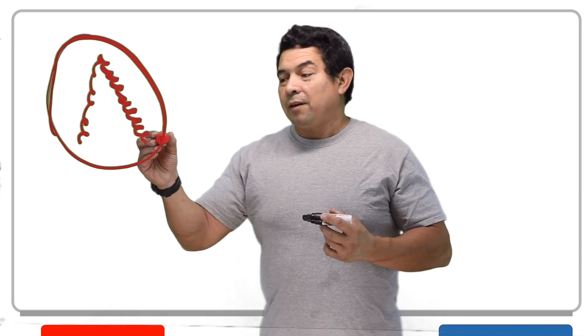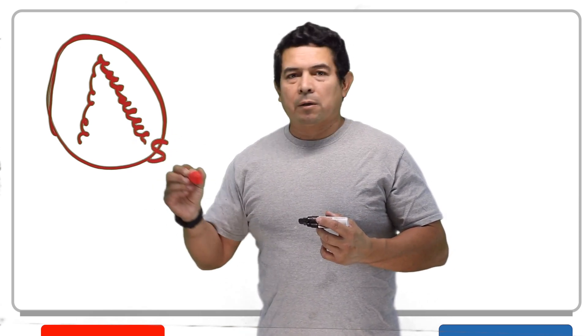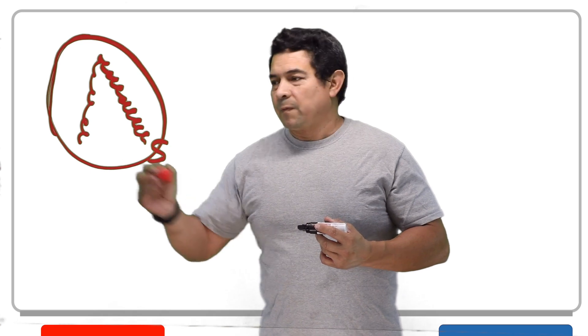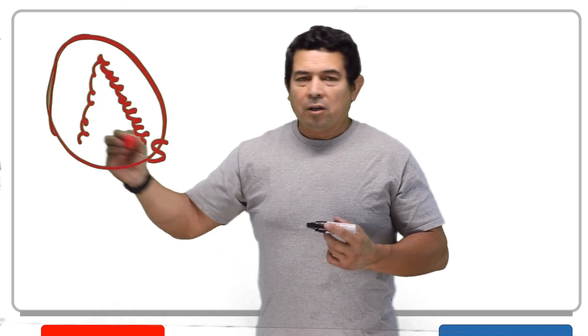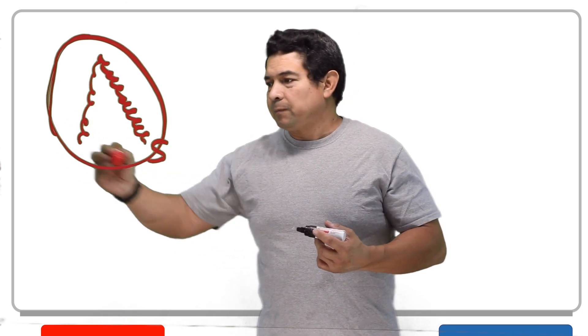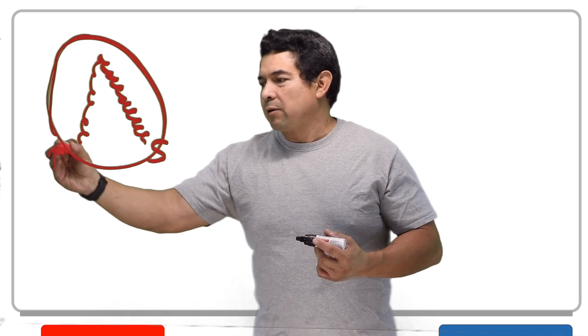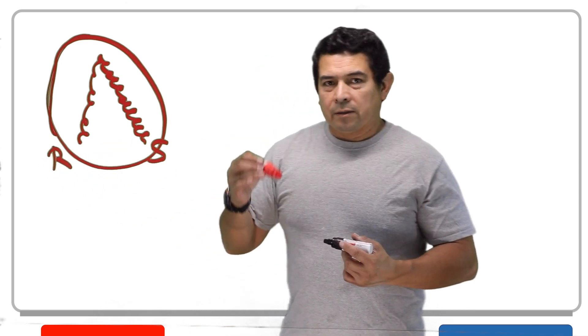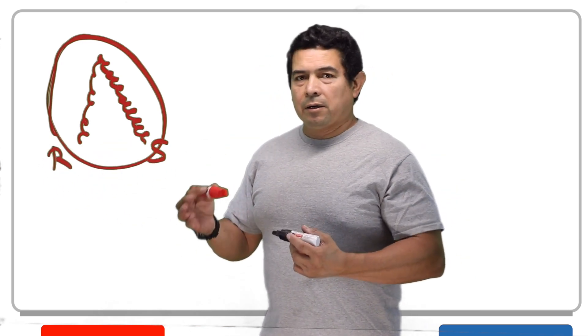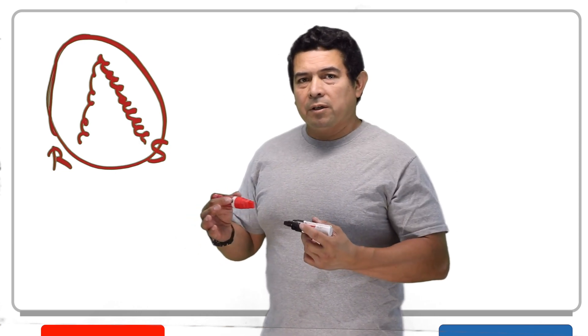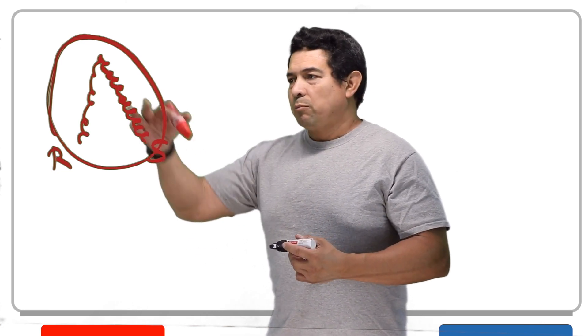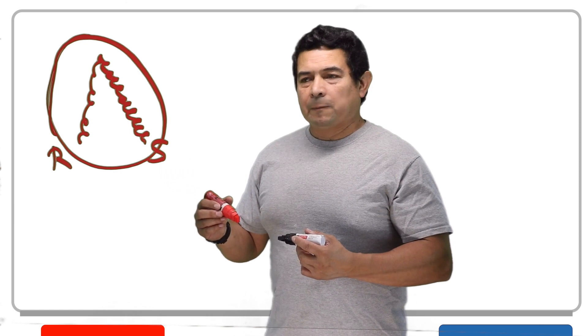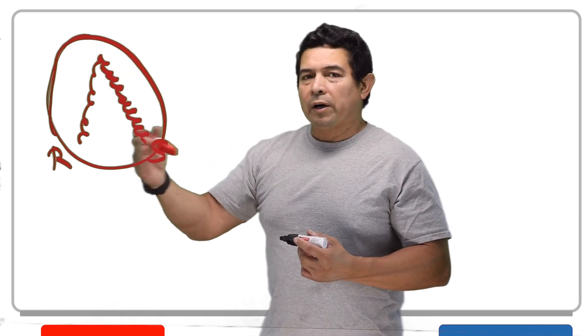Because it has more resistance, then we're going to say that is going to be our start winding. The other winding on this side, which has less resistance, is going to be my run winding. Now, take a look at the other video that I did about finding out which one is your common, run, and start connections, because I explained a little bit about the windings. But we have two windings.